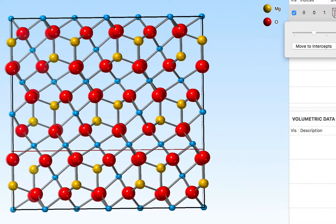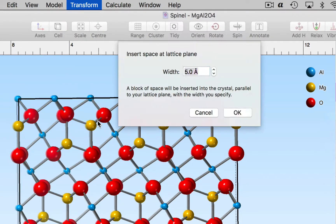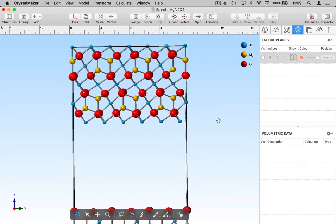I can insert space using the transform menu, insert space and I'm prompted to specify how much space we should insert. I'm going to insert 10 angstroms. So click OK and now we have a larger unit cell with some space showing.